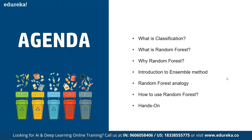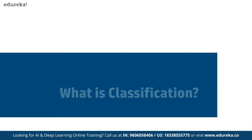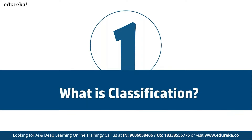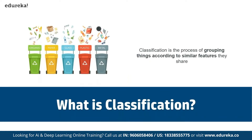With the demand for more complex computations, we cannot rely on simplistic algorithms. Instead, we must utilize algorithms with higher computation capabilities, and one such algorithm is random forest. Classification is the method of predicting the class of a given input data point. Classification problems are common in machine learning and fall under supervised learning. For example, we want to classify emails into spam and non-spam — this is a classification problem.